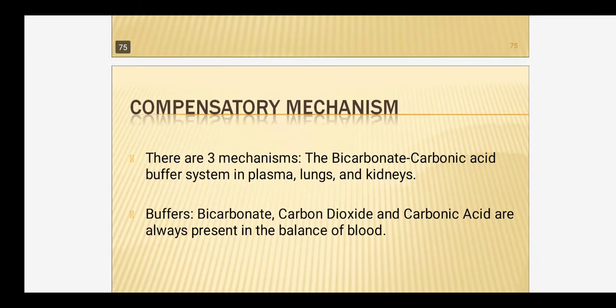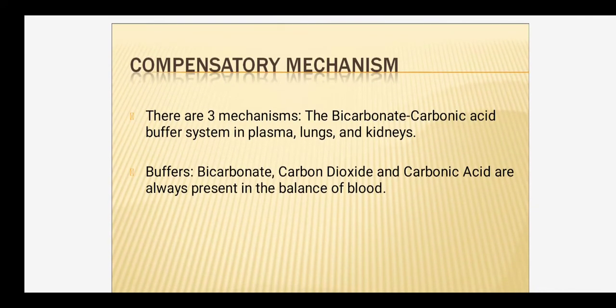How does acid-base balance occur? There are three mechanisms. One is the bicarbonate-carbonic acid buffer system in the plasma, lung, and kidney. They are always present in the blood to balance — acting like a buffer.